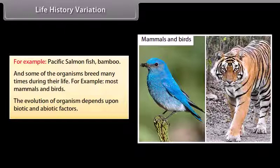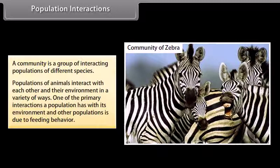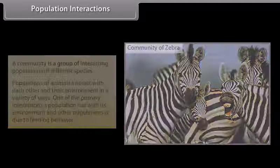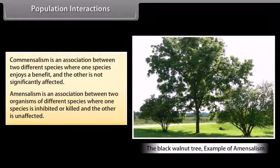Population interactions: A community is a group of interacting populations of different species. Populations of animals interact with each other and their environment in a variety of ways. One of the primary interactions a population has with its environment and other populations is due to feeding behavior. Commensalism is an association between two different species where one species enjoys a benefit and the other is not significantly affected. Ammensalism is an association between two organisms of different species where one species is inhibited or killed and the other is unaffected.